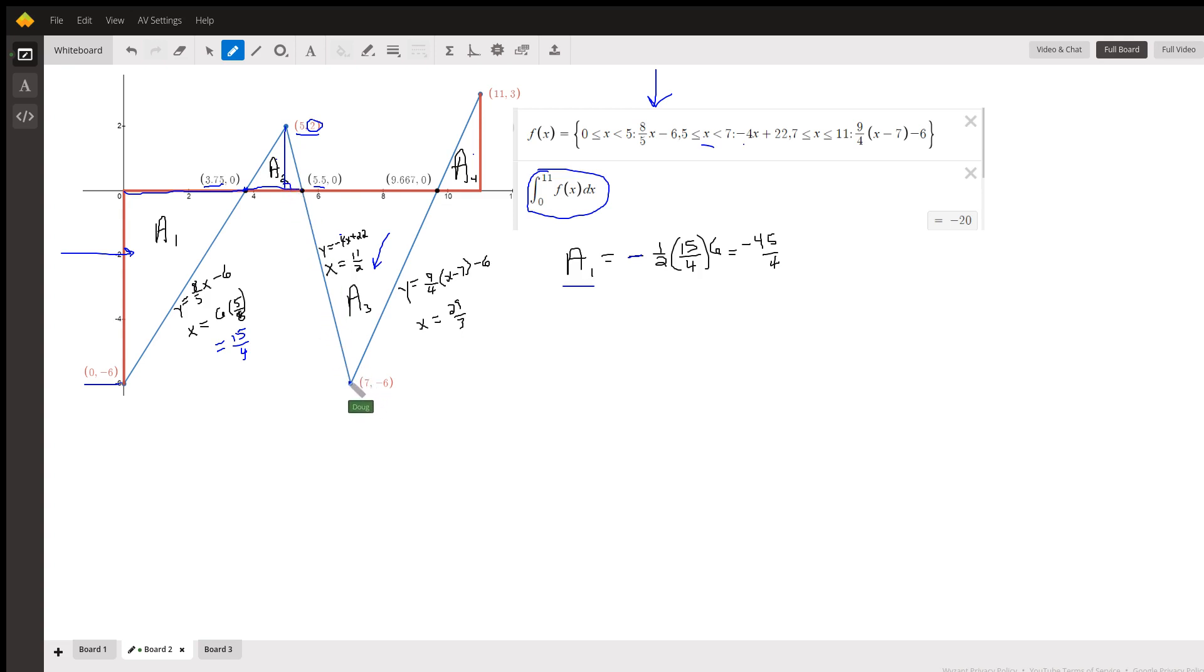Similarly, the height of this triangle is 6. And the length of that base is this number, take away this number.